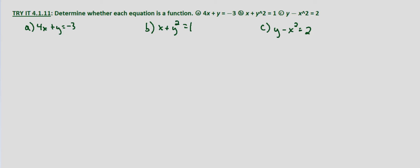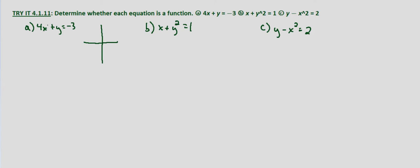With this first one, we have x and y both being taken to the first power. That's an indicator right off the bat that this is a line. A line we know is a function because it doesn't take on multiple y values for every x value. If we graphed this, we could plot points. If we plug in x equals zero, we get y equals negative three. If we plug in x equals negative one, then that's going to be one.